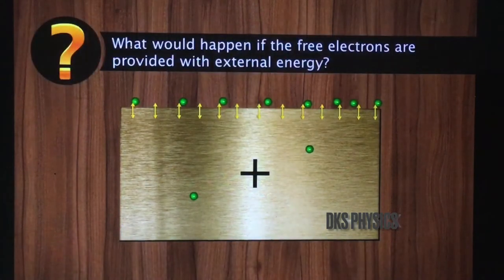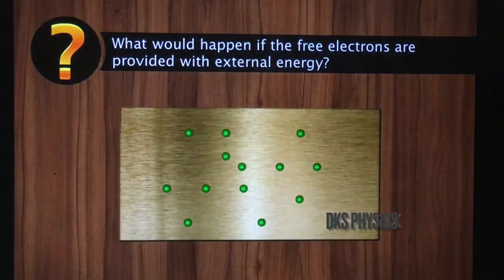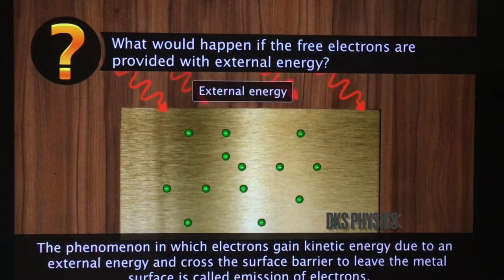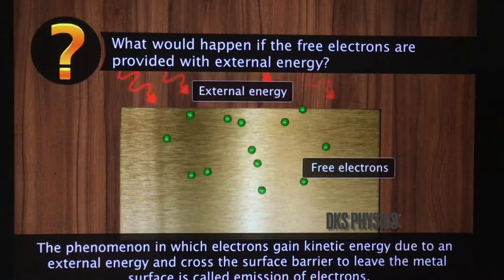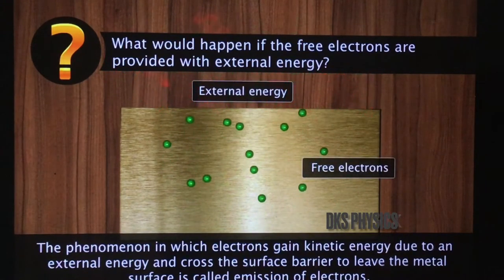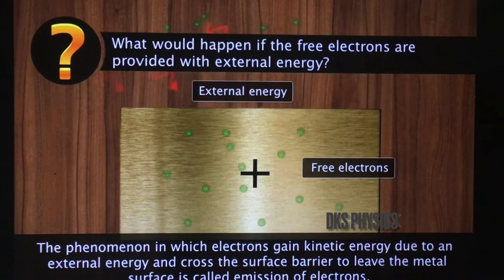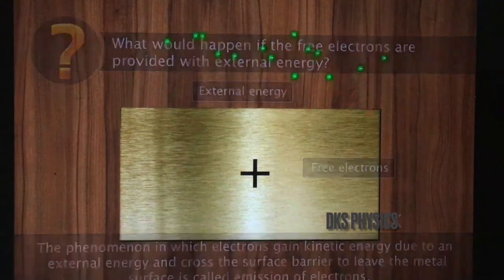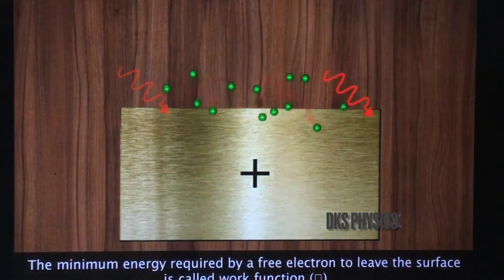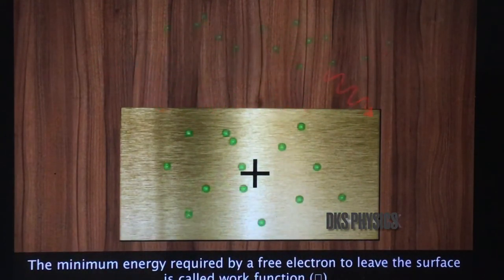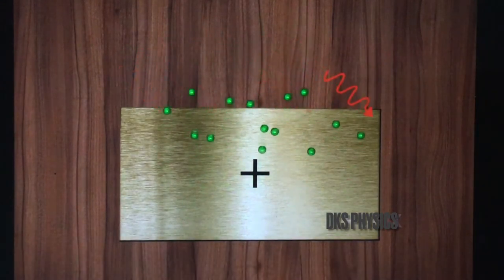What would happen if the free electrons are provided with external energy? When adequate energy is provided to these free electrons, they gain kinetic energy and cross the surface barrier to leave the metal surface. Such a phenomenon is called emission of electrons.